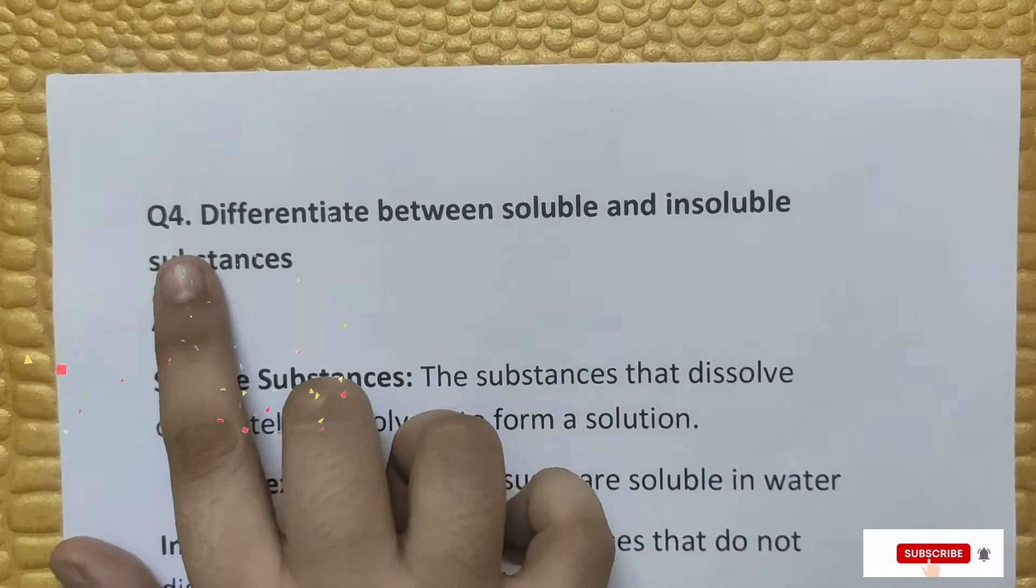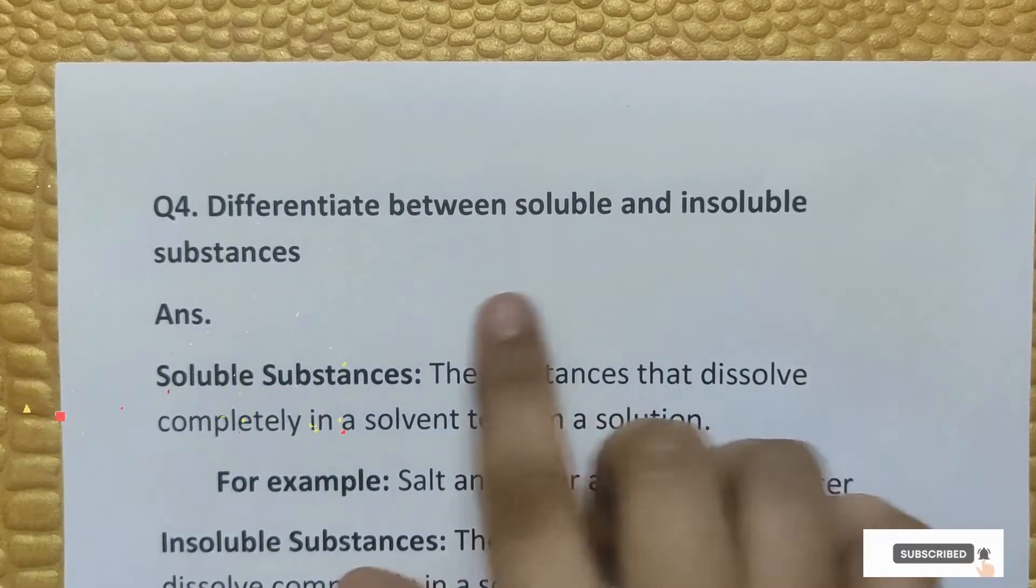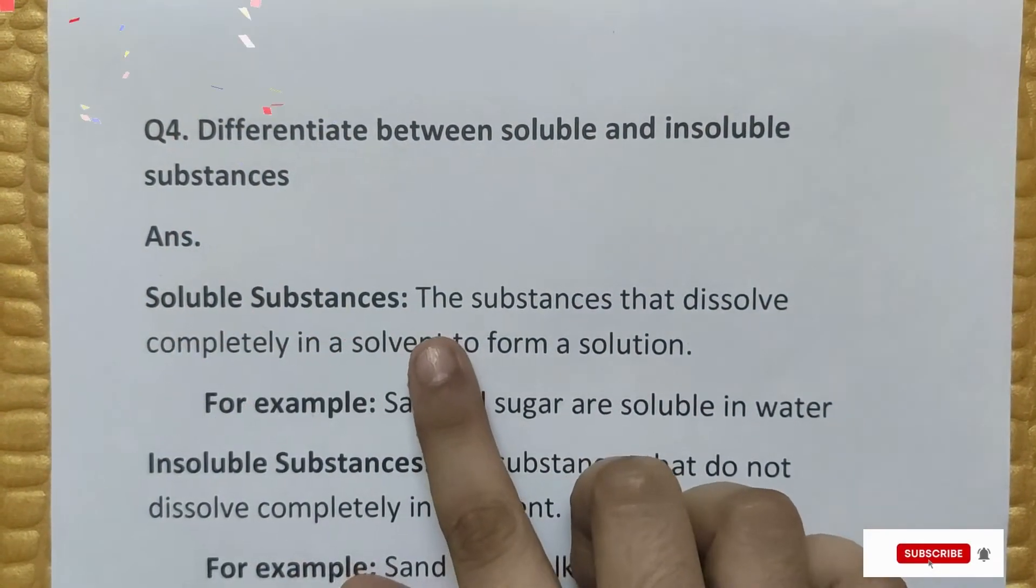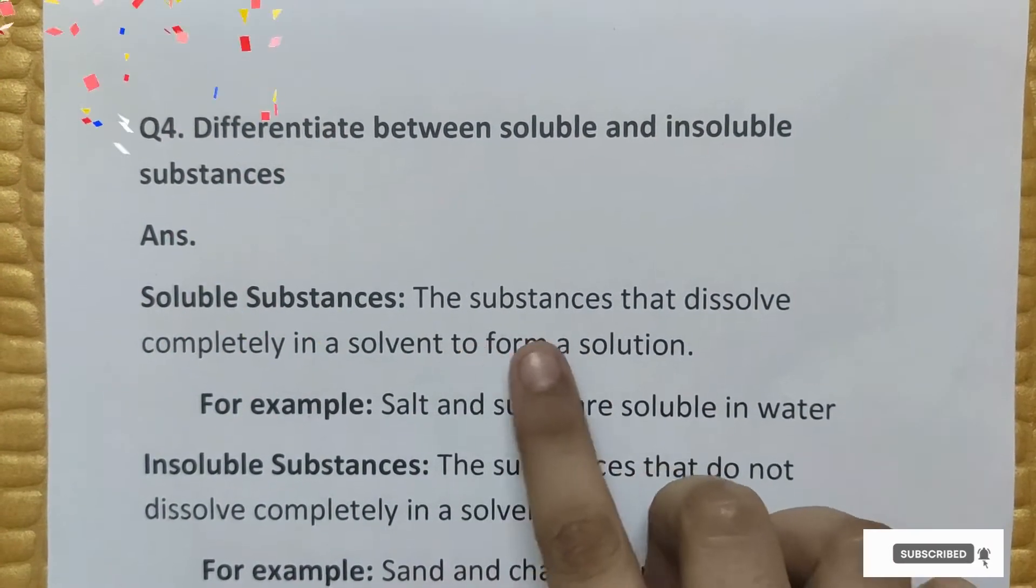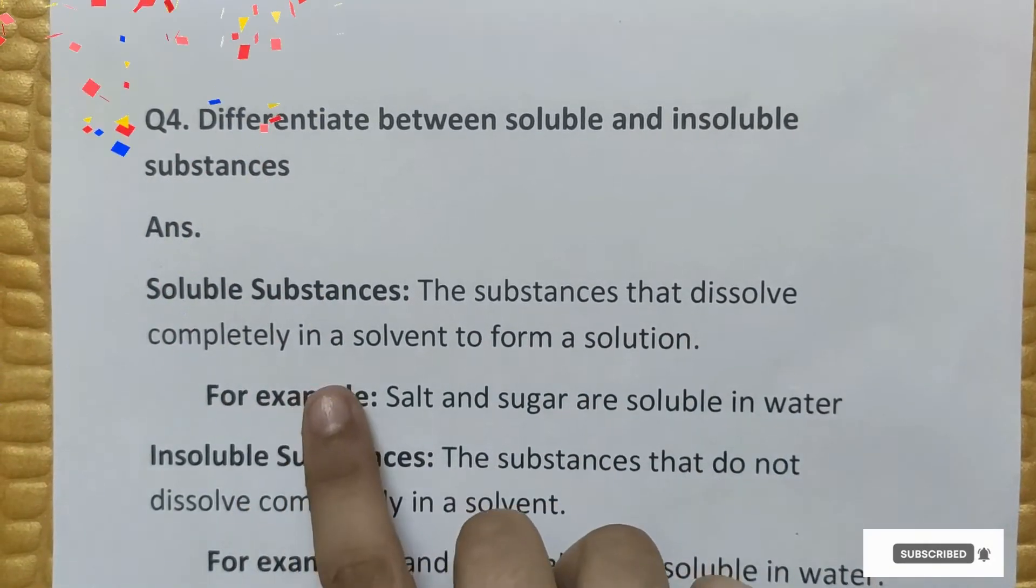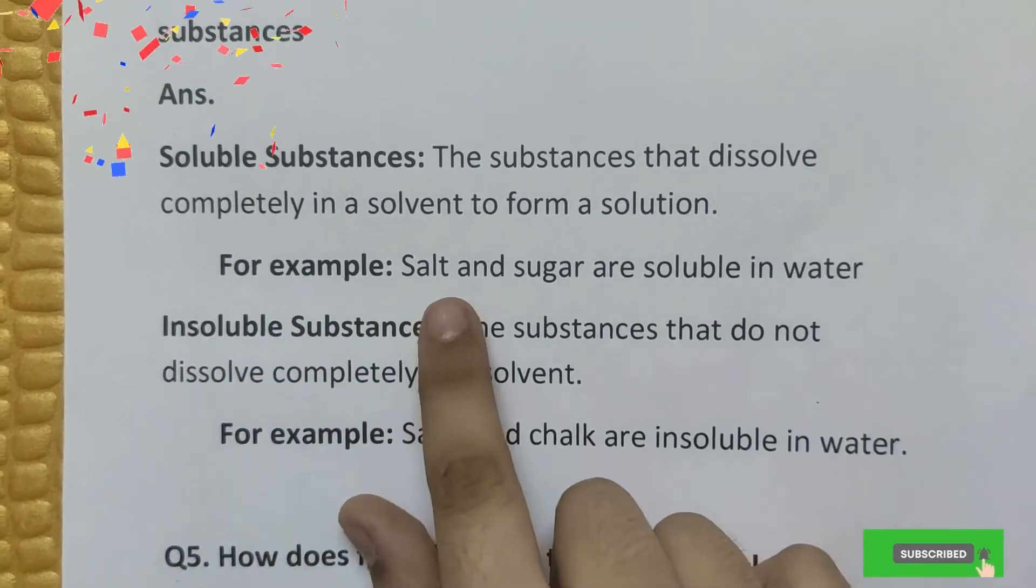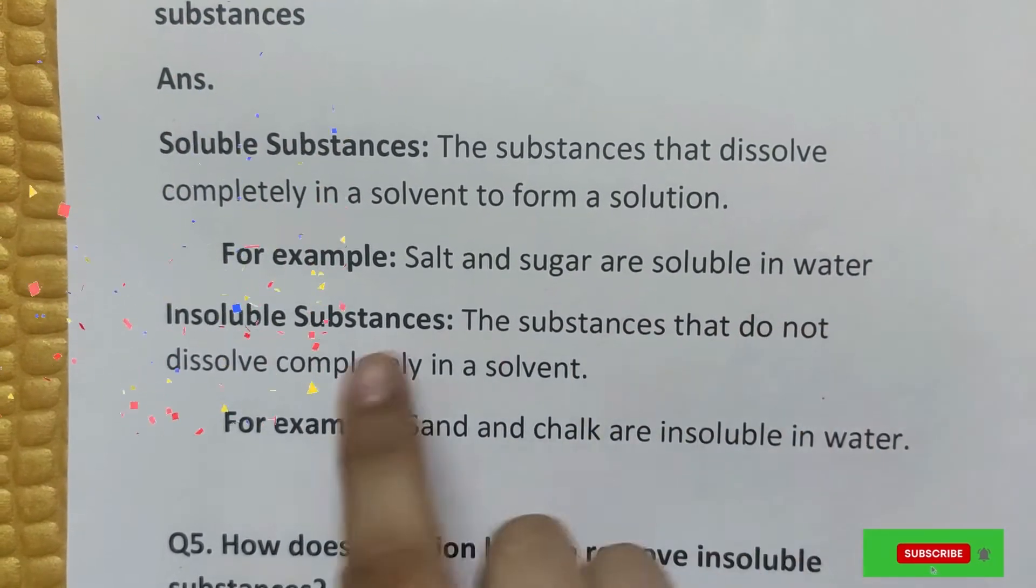Question number four: Differentiate between soluble and insoluble substances. Answer: Soluble substances are the substances that dissolve completely in the solvent to form a solution. For example, salt and sugar are soluble in water.